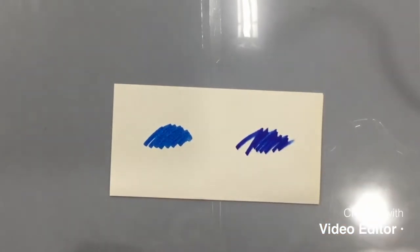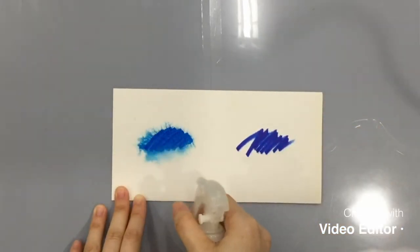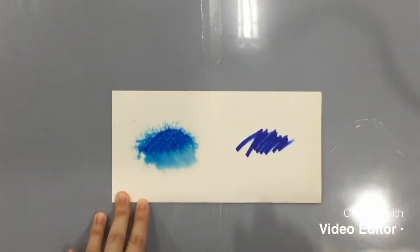Just a little scribble on it. I'm going to spray some water on both scribbles and you will see what's going to happen. You see, only the scribble done with the water-based marker is bleeding, while there's nothing happening on the oil-based one.